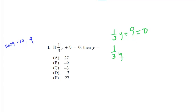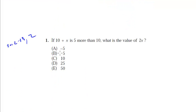So subtract 9 from both sides, we get one third y equals negative 9, times both sides by 3, and we're going to get y equals negative 27, which is choice A, which is the answer. So you can see these are all number 1s, all pretty straightforward and easy.